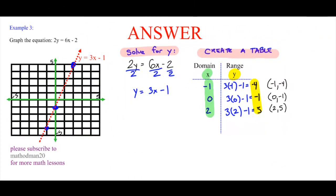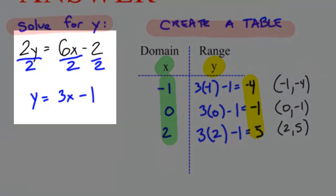First step that you should have made was to solve for y. The only thing you had to do was divide 2 to both sides. Once you solved for y, you get y equals 3x minus 1.